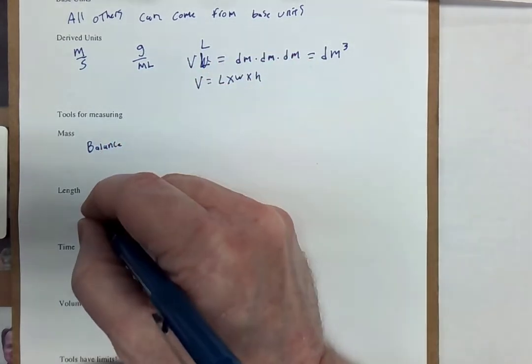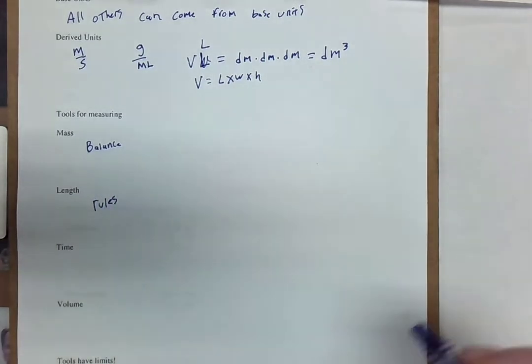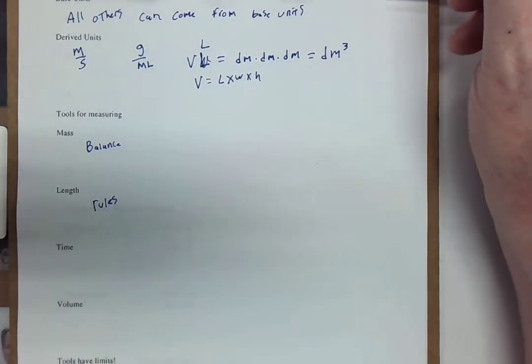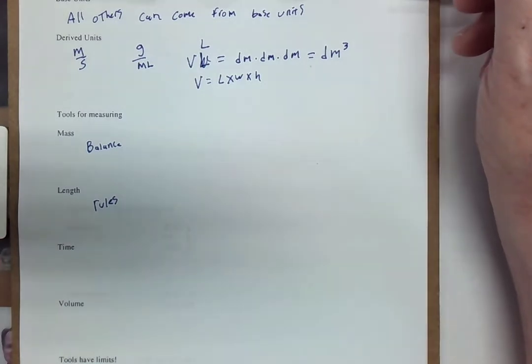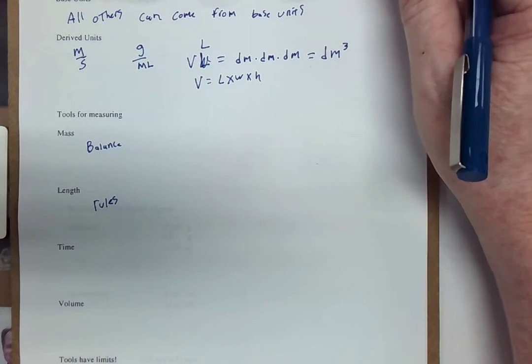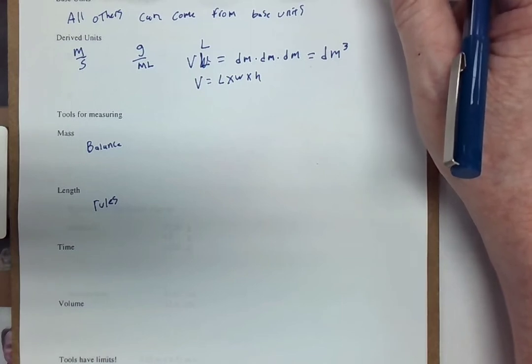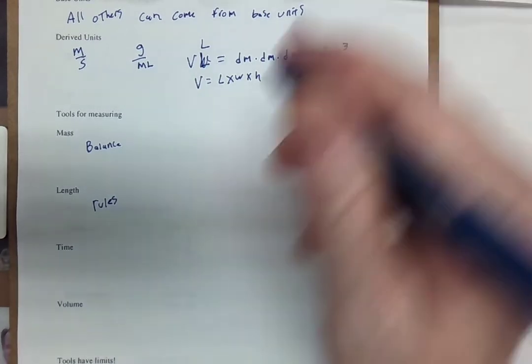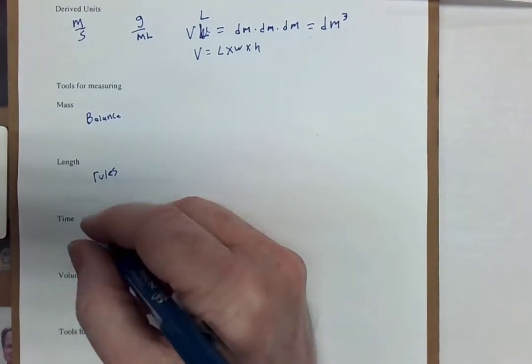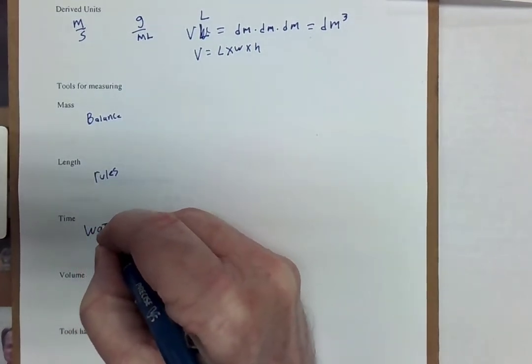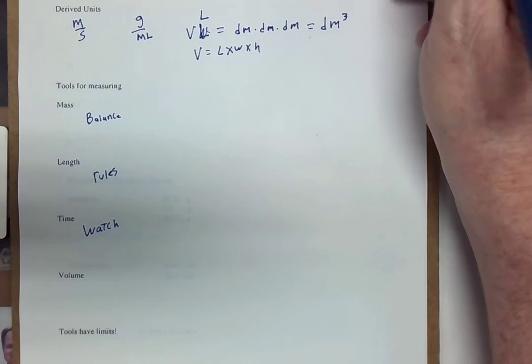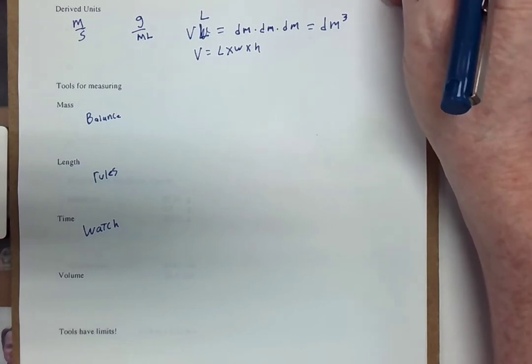Length, typically we use a ruler because we're dealing with short lengths, but some of you have fancy apps on your phone that can do that, or you have tape measures. There are a lot of different devices that we have that actually measure length. Time is measured with a watch, or more specifically, we use a stopwatch very often in here to measure time.